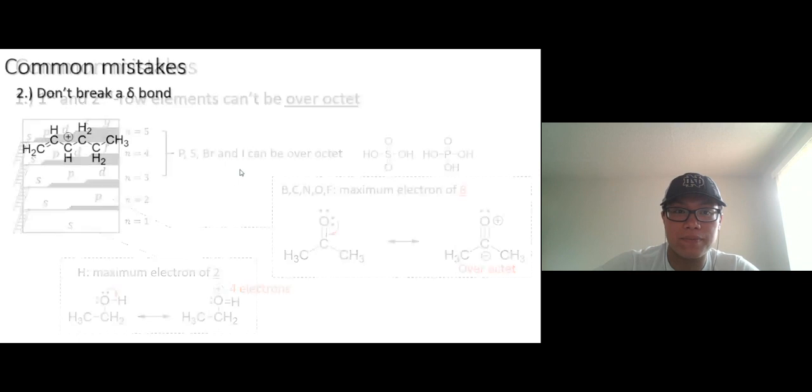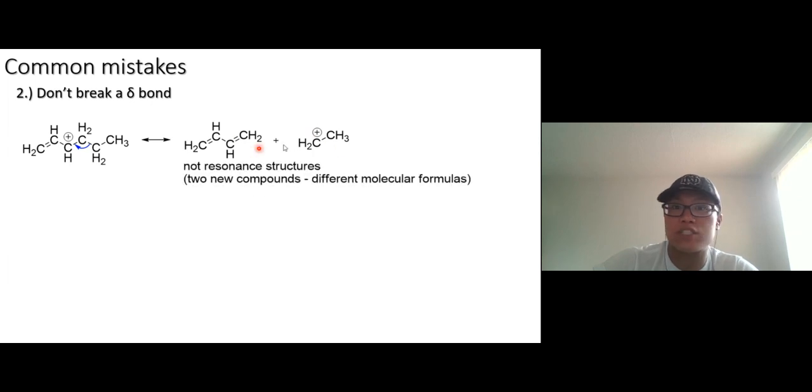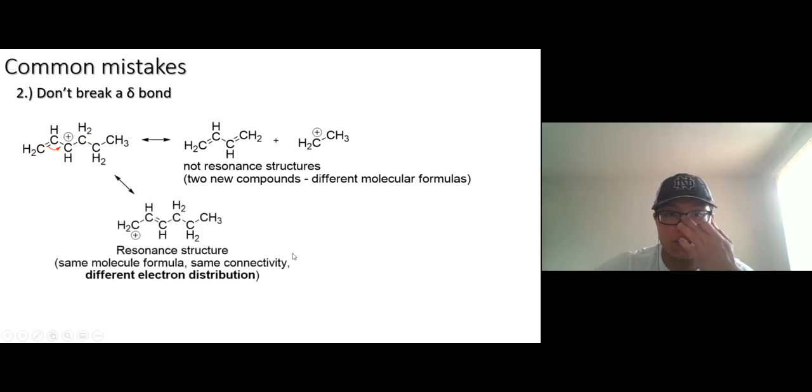Common mistakes: do not break a sigma bond. Breaking a sigma bond is when you do a reaction; you actually produce a product. This is not a resonance structure—it has a different molecular formula. The resonance structure has to represent the same molecule with the same molecular formula. You can draw this one: double bond next to a carbon cation. Here we go, that's a resonance structure.